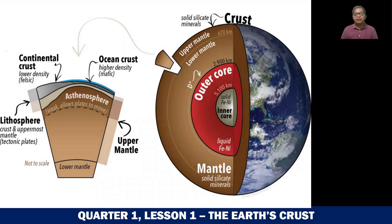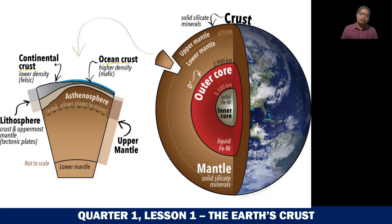Hello everyone! Welcome to our next video, our second video. This is still lesson number one. From the first video, we discussed about the first or the outermost layer, the thinnest layer of the Earth — the crust. And you learned that there are two types of crust: the continental crust and the oceanic crust, and we discussed the differences between them.